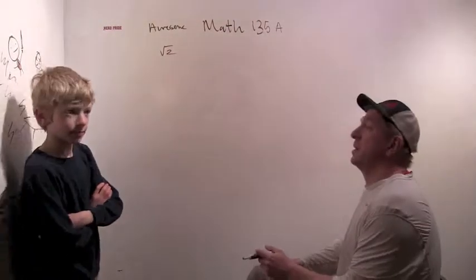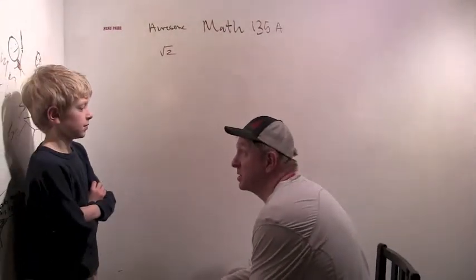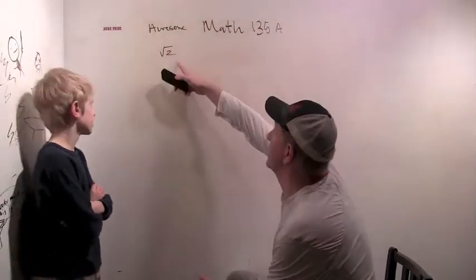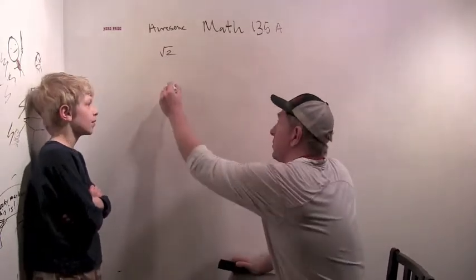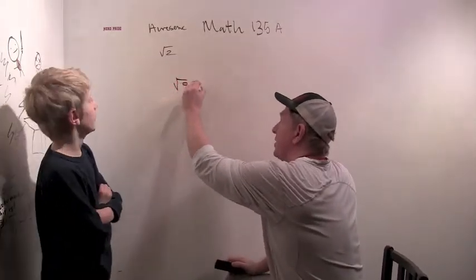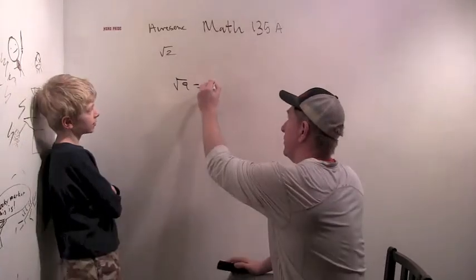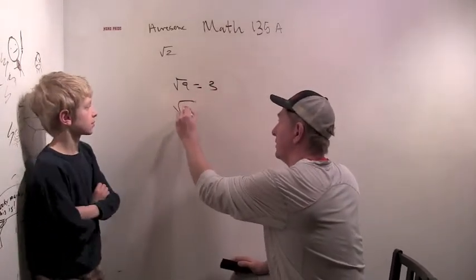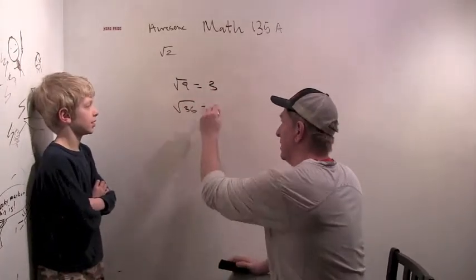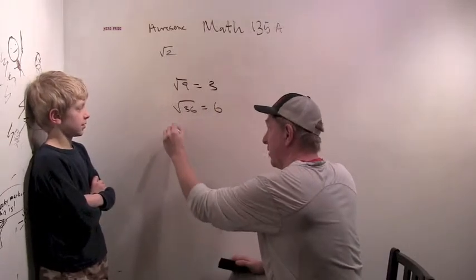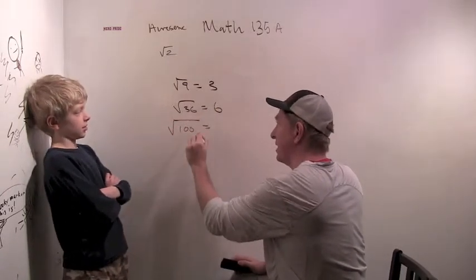So we started a new chapter today and we're talking about square roots of numbers that aren't perfect squares. We like things like the square root of 9 because that equals 3, and we like things like the square root of 36 because that equals 6, and we love things like the square root of 100 because that is 10.